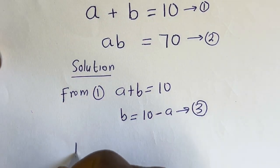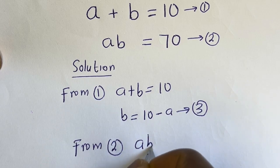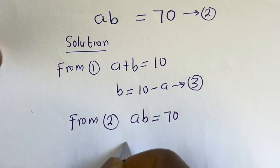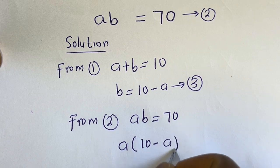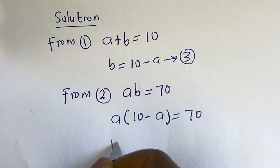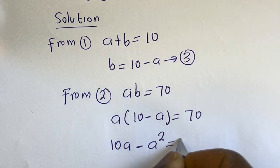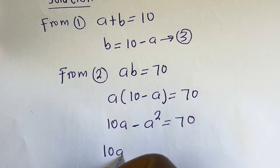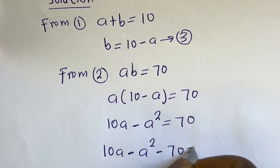Also, from equation 2, AB is equal to 70. Let's substitute for B. We have A times (10 minus A) is equal to 70. Then A multiplied by 10 gives 10A minus A squared is equal to 70.